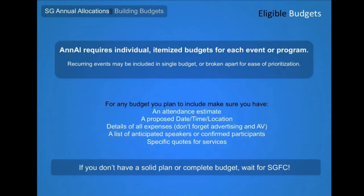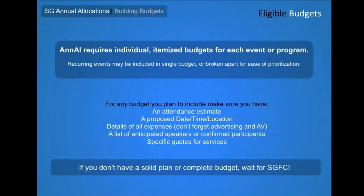Your overall annual allocations application will include separate budget submissions for each of your events. For events that recur weekly or quarterly, you can choose to submit a single form or break them down into individual budgets for each occurrence — the method will depend on how you choose to rank those programs. For example, if you have a quarterly film series, you may combine the screenings into one single budget with a single ranking, or you may choose to rank fall and spring events higher than winter and submit a separate budget entry for the winter screening so you can rank it separately.